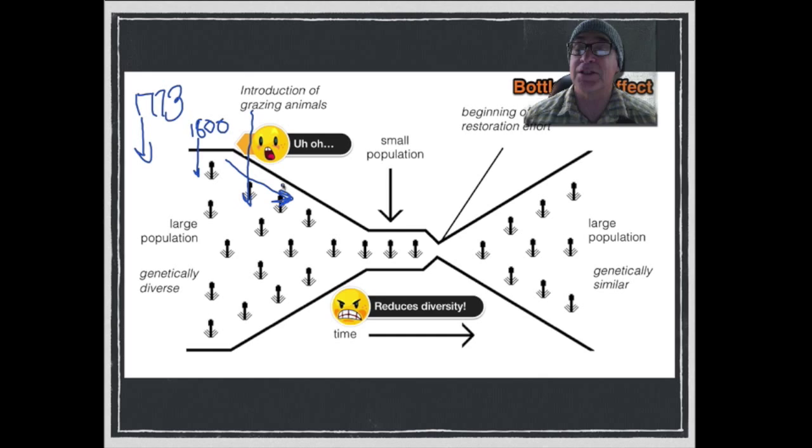Until the 1930s when conservationists began to apply some of the sciences and concepts of the day and started to remove the feral populations. There was somewhere in the neighborhood of anywhere from 3,000 to 40,000 feral sheep that had to be removed, along with the pigs and the cattle. The decline started to slow a little bit until the 1950s.